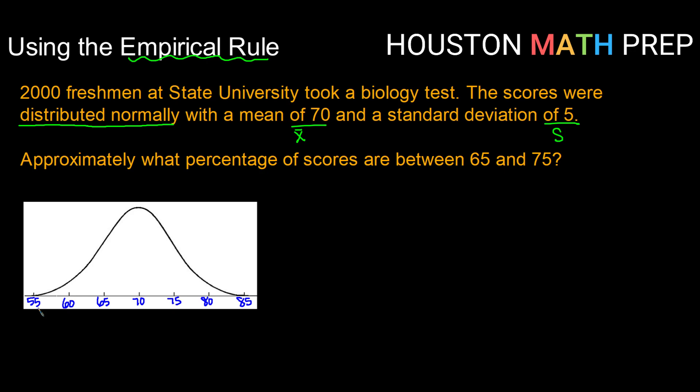So using this, approximately what percentage of scores are between 65 and 75? So between 65 and 75 puts us in this region right here. And the empirical rule states that between one standard deviation below and one standard deviation above, we'll find 68% of our data. So the answer to our question here is 68%.